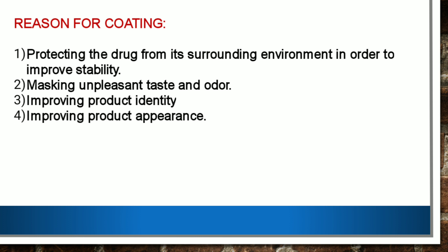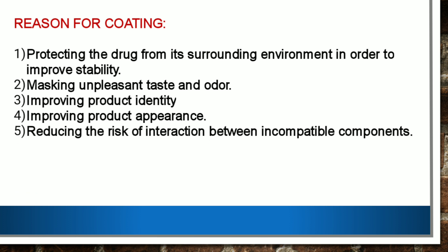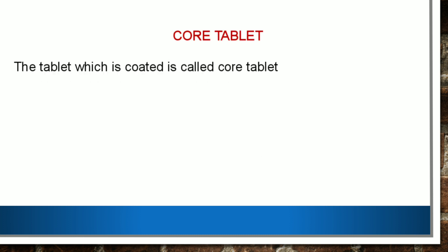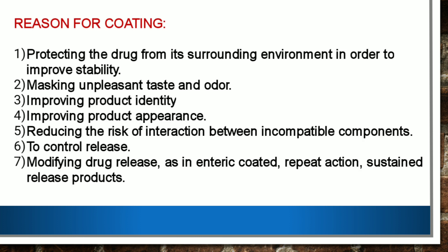Next is improving product appearance. Then, reducing the risk of interaction between incompatible substances or components. Next is to control release and to modify drug release, as in enteric coated, repeated action, and sustained release products. Other purposes for coating include: to retard loss of volatile ingredients, to prevent gastric irritation, and to protect the drug from the gastric environment of the stomach, as in the case of enteric coating.